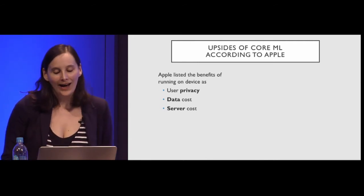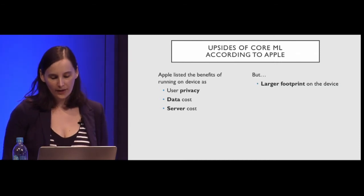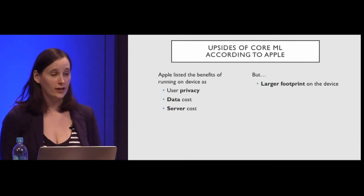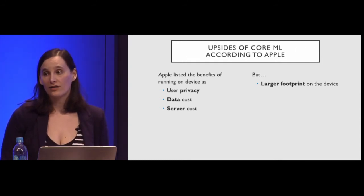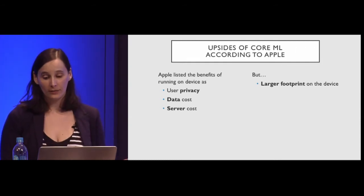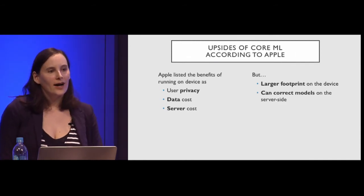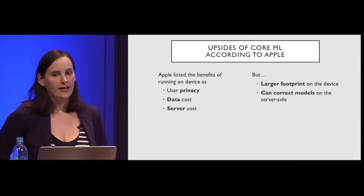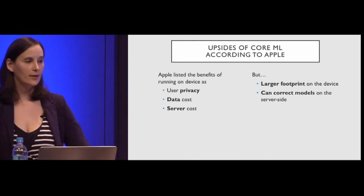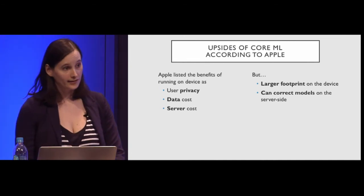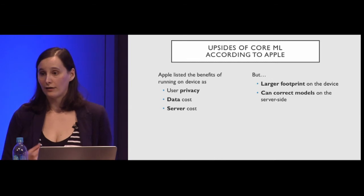For something like an image, it's a compelling argument that you're not uploading an image and then downloading another one with your machine learning output. But there are downsides. You've got a larger footprint on the device — some of these models are enormous. You can correct models on the server side while watching what they're doing, and as I mentioned, you can now correct them on the device by downloading and compiling models on the fly.